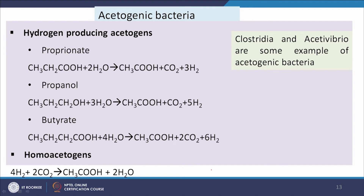Acetogenic bacteria convert free fatty acids to acetate, or to H2 and CO2 which can further be converted to acetate — two routes are possible. Hydrogen-producing acetogens such as Clostridium and Acetivibrio convert propionate to acetate + CO2 + 3H2, propanol to acetic acid, and butyrate to acetic acid. Homoacetogens combine H2 and CO2 to form acetic acid (CH3COOH).